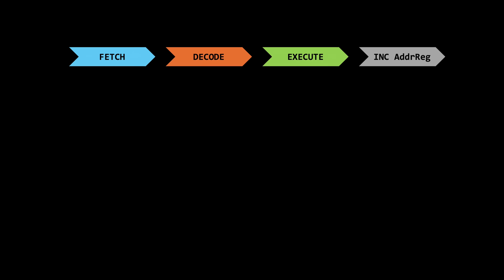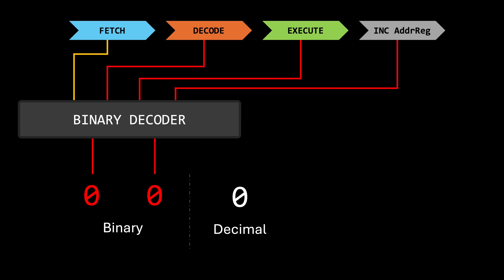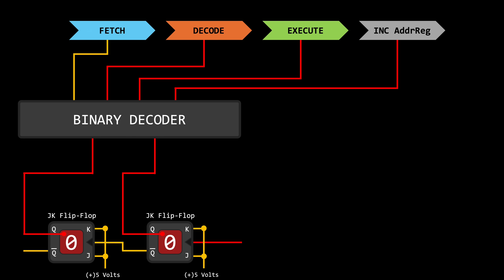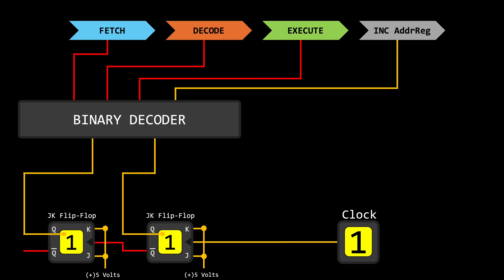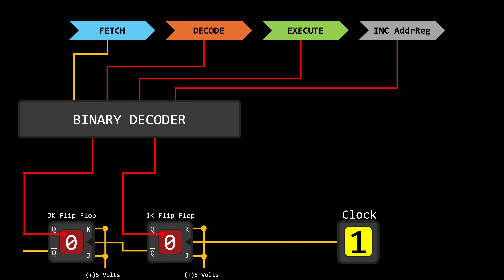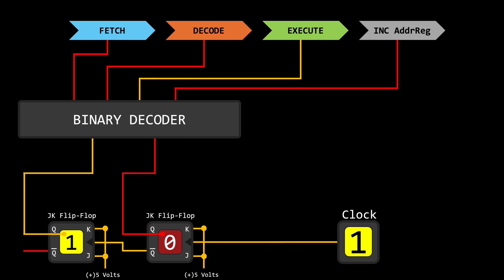Now we can finally assemble all the puzzle pieces. We needed a mechanism that periodically changes the decoder's input to alternate between different execution stages. Since we're dealing with four stages, we need a 2-bit binary number as input, so a binary counter made from two JK flip-flops is enough. We connect the binary counter to a clock, making the computer progress to the next stage on every rising edge. And there we have it — a very basic idea of how a clock continuously instructs a computer to move one step forward.